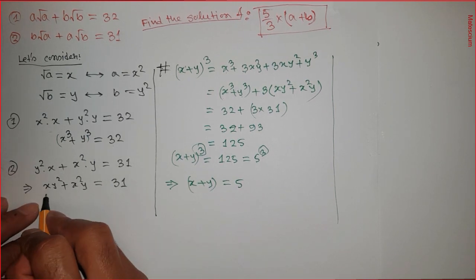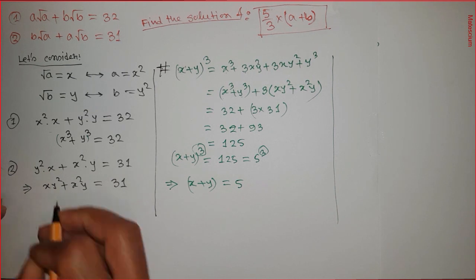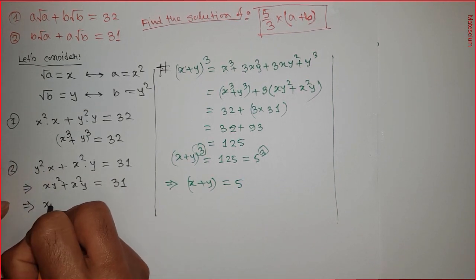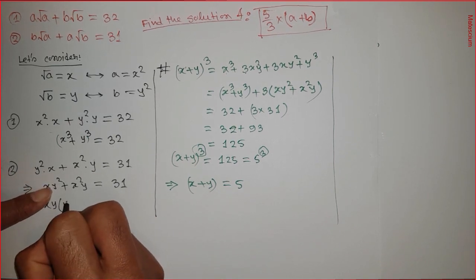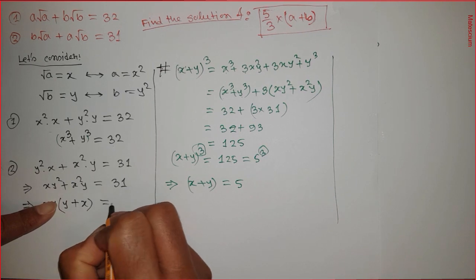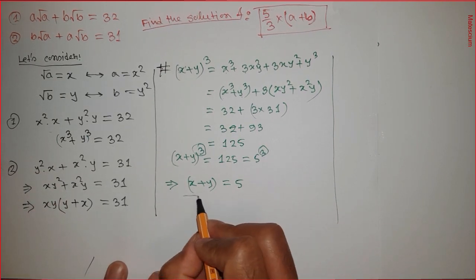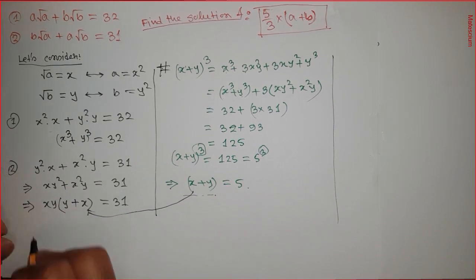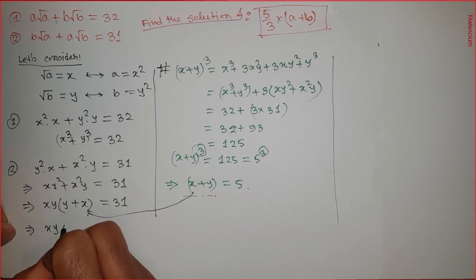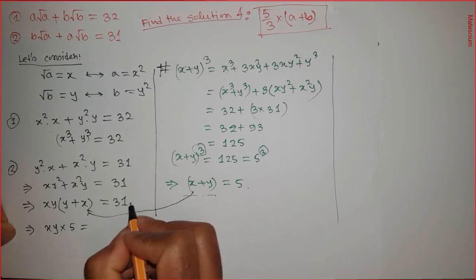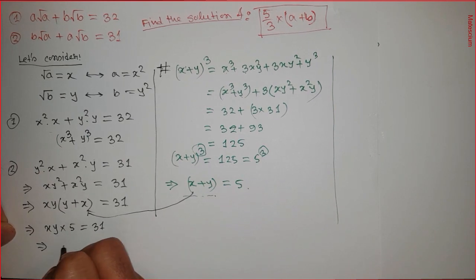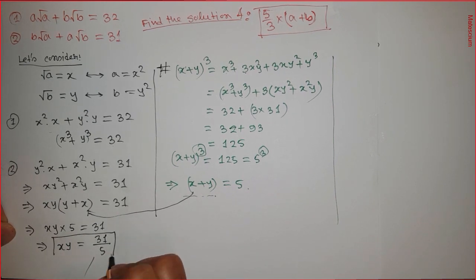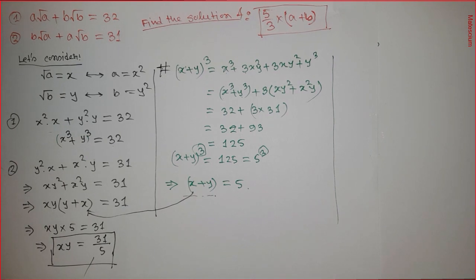Going back to equation two: xy² + x²y. We can factor out xy, giving xy(y + x) = 31. Since x + y = 5, we replace (x + y) with 5: xy times 5 = 31. Therefore xy = 31/5. We'll need this value later.